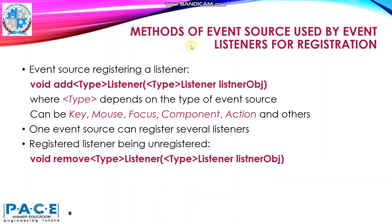The Event Source class provides the methods for registering the Event Listener. There is a method called Add Type Listener. Since there are different kinds of listeners — for example, Key Listener, Mouse Listener, Focus Listener, Component Listener, Action Listener — accordingly there are methods: Add Mouse Listener, Add Key Listener. They take the corresponding Event Object as a parameter. If a listener is registered with the source and we want to unregister it, there are methods called Remove Type Listener.